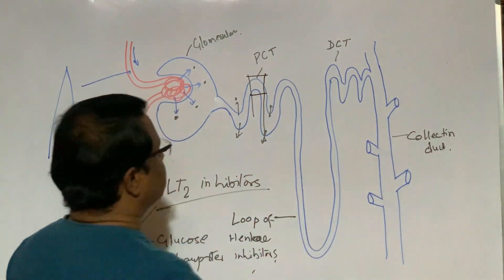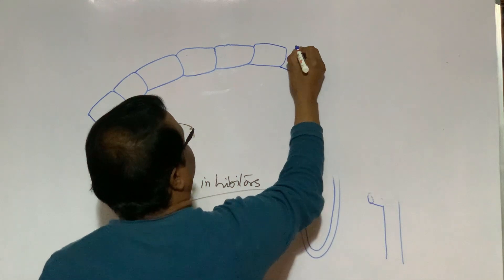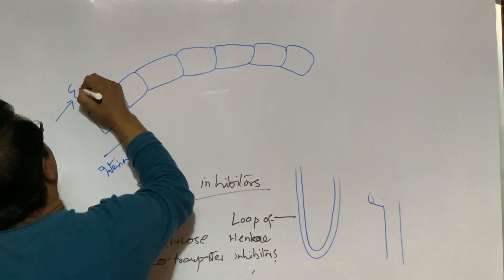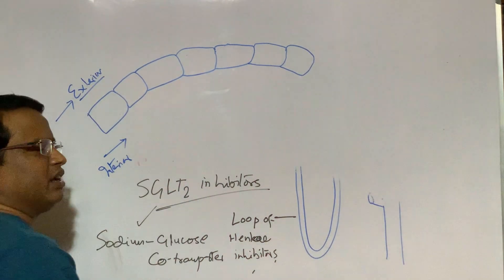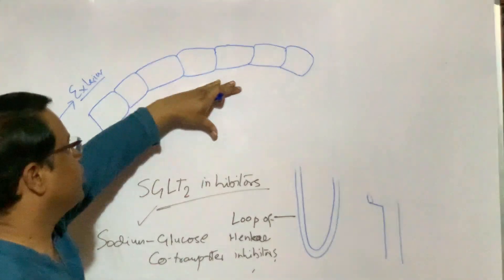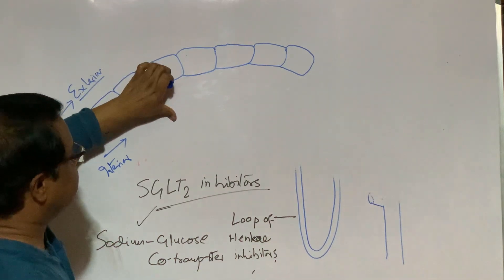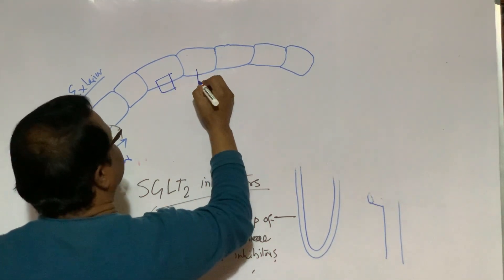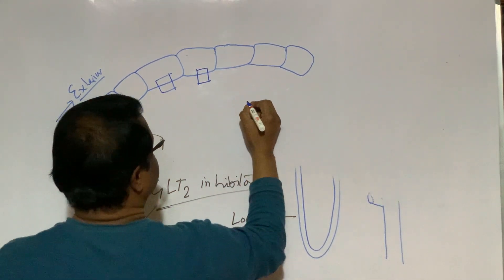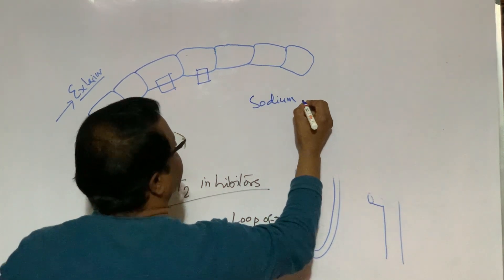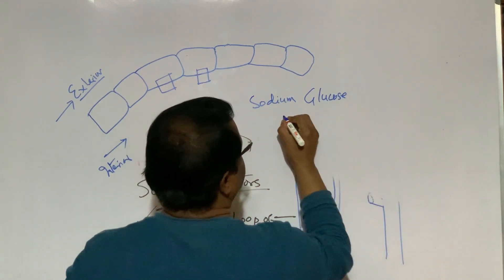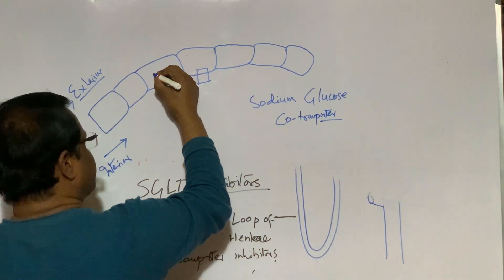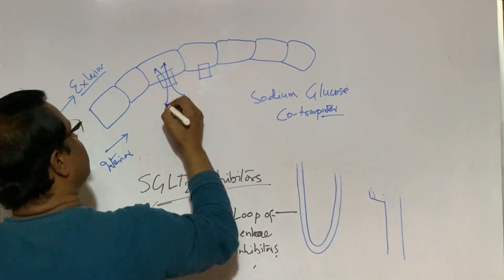If we draw this portion separately, the picture will be like this. That is the interior of lumen, that is the exterior of lumen. Lumen means nephron, proximal convoluted tube. In the luminal portion, there is a receptor. That receptor is called sodium glucose co-transporter.